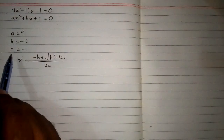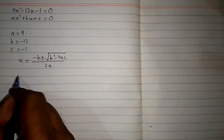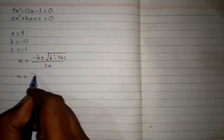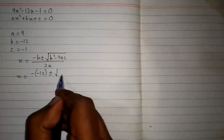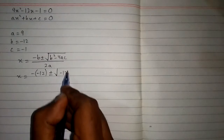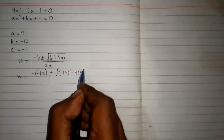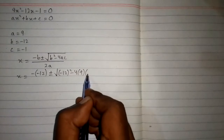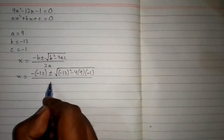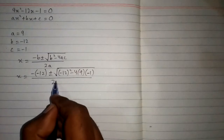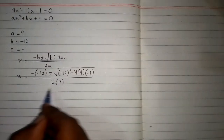Now we will put the values of a, b and c in this formula. So we have x is equal to minus times minus 12 plus minus under root of minus 12 square minus 4 times 9 times minus 1, upon 2 times 9 in the denominator.